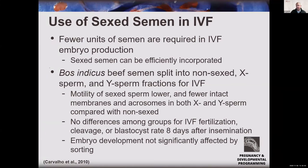For the use of sexed semen in IVF, it makes a lot of sense. Many labs have contracts to perform reverse sorts — you can take a frozen straw of conventional semen from a valuable bull, reverse sort it, sex it, and utilize it for in vitro fertilization. You can't do it on a large basis, but it can be used for IVF to generate multiple embryos.